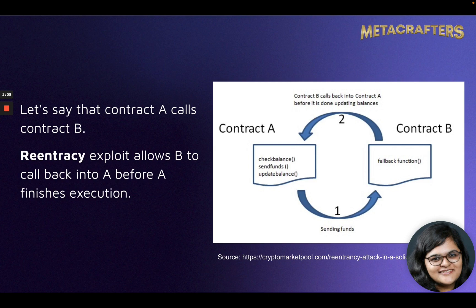This exploit allows contract B to call back into contract A before A finishes execution. So while A is doing some steps for properly executing, before those steps are completed, contract B calls back into contract A and tries to create an exploit and withdraw the funds.